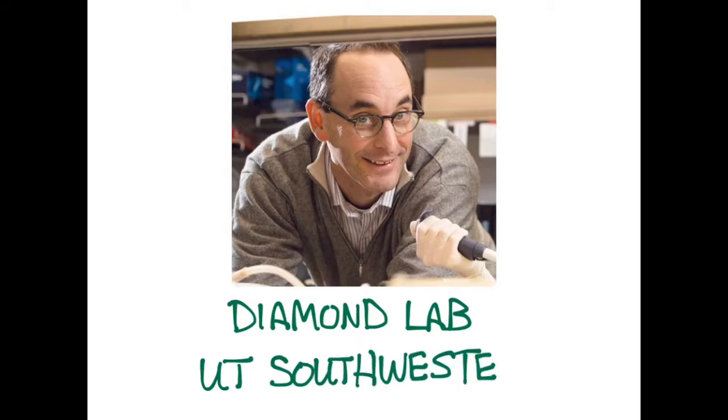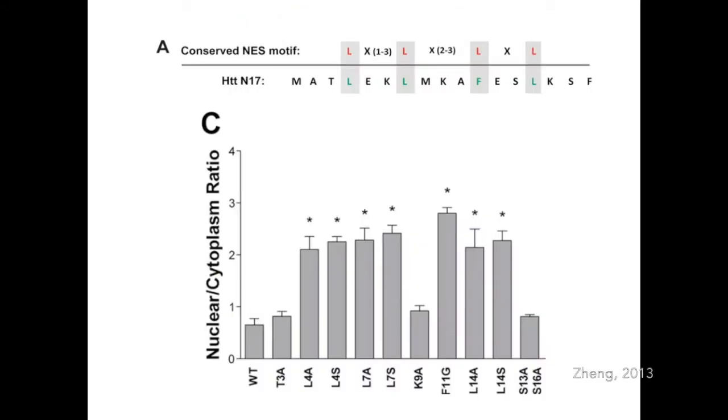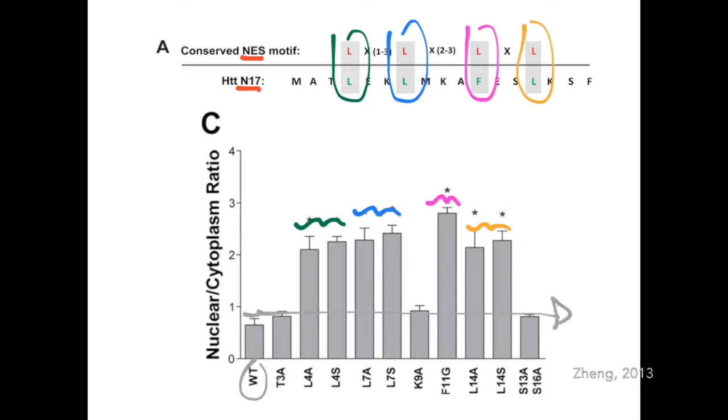In 2013, Mark Diamond's lab determined that the nuclear export signal in Huntington consisted of four amino acids near the N-terminus: leucine-4, leucine-7, phenylalanine-11, and leucine-14. Experiments in cultured neurons showed that mutations in any of these four amino acids resulted in increased aggregation of Huntington in the nucleus relative to control.